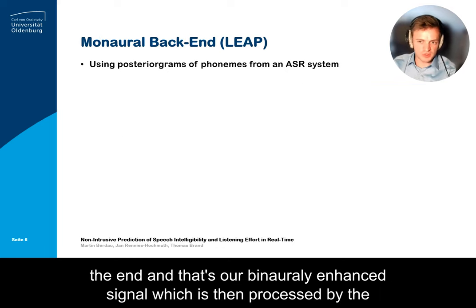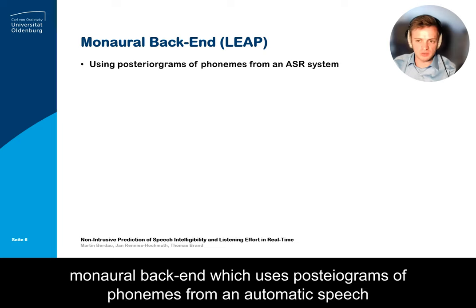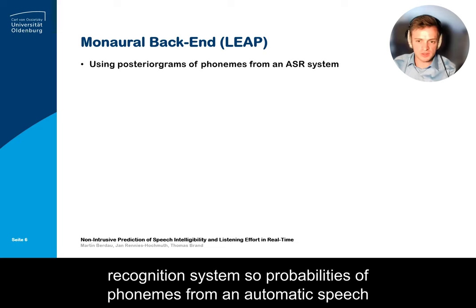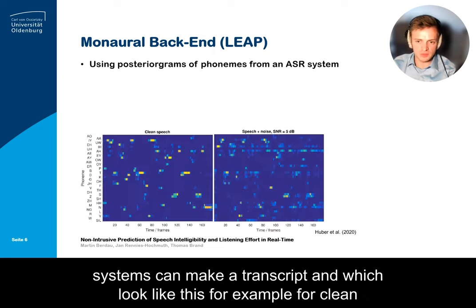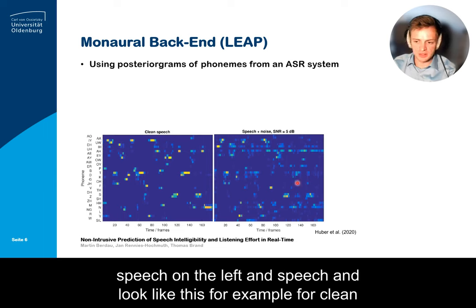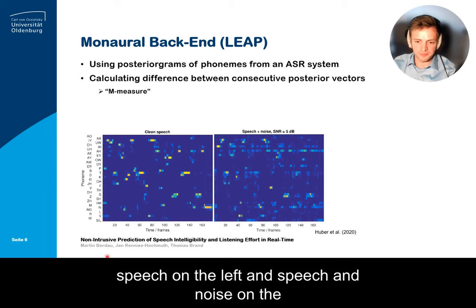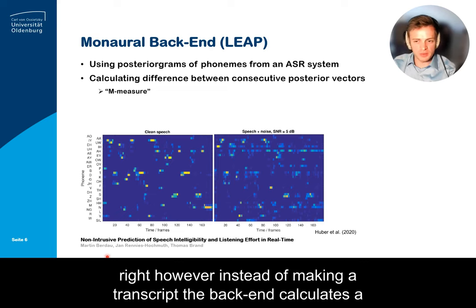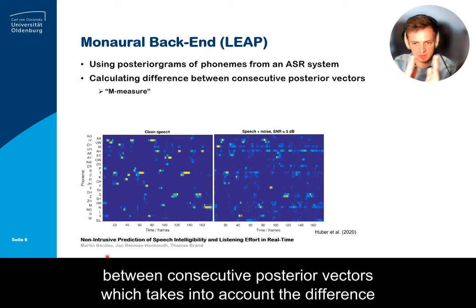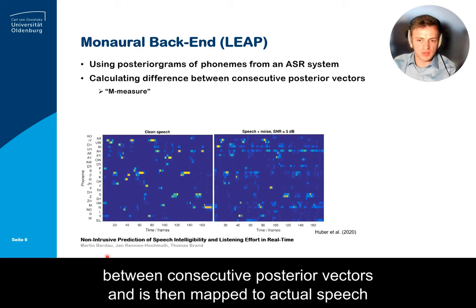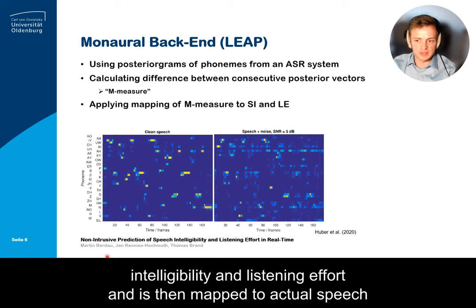This binaurally enhanced signal is then processed by the monaural back end, which uses posterograms of phonemes from an automatic speech recognition system — probabilities of occurring phonemes from which ASR systems can make a transcript. These look, for example, like clean speech on the left and speech in noise on the right. Instead of making a transcript, the back end calculates a so-called M measure from the posterogram, which takes into account the difference between consecutive posterior vectors and is then mapped to actual speech intelligibility and listening effort values.